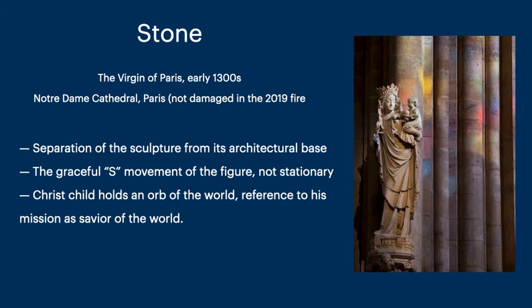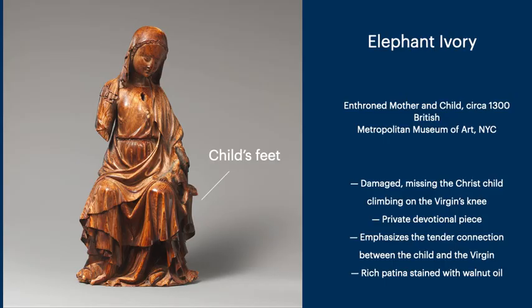Another stone figure, which is in almost all of the textbooks on history of art — this is the Virgin of Paris at Notre Dame Cathedral. It was not damaged in the fire. The reason why this is important is because it shows the separation of the sculpture from its architectural base, and there's a graceful S-movement of the figure, not stationary like many of the earlier statues. She holds the Christ child, who in turn is holding an orb of the world — a reference to his mission as Savior of the world. And here we have a small elephant ivory — heavily damaged, but you can see the feet of the Christ child climbing up on the Virgin's lap. There's a tender connection between the child and the Virgin, and the ivory has a rich covering, the stain of walnut oil.